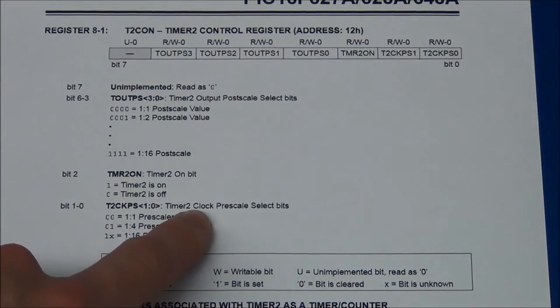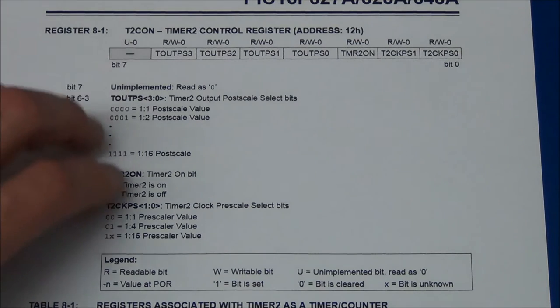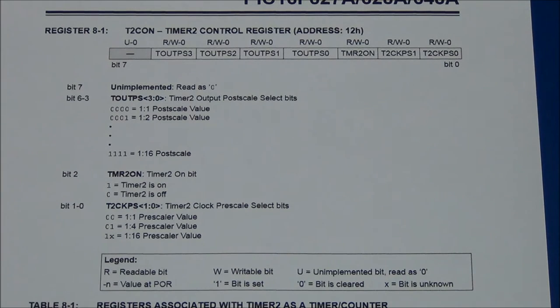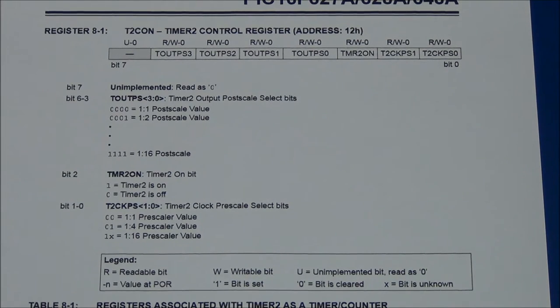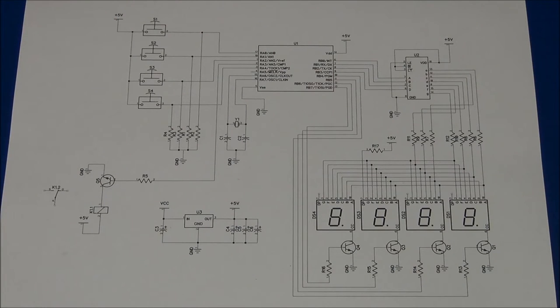But if you want to use the internal or the external 4 megahertz crystal, then we would have to use timer 2, because the two other timers cannot be divided down to match one second with the 4 megahertz crystal. So with all this figured out, I could start to write the software for the timer, so that was what I did next.